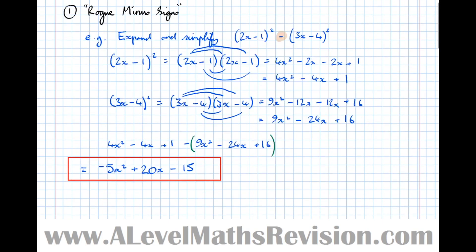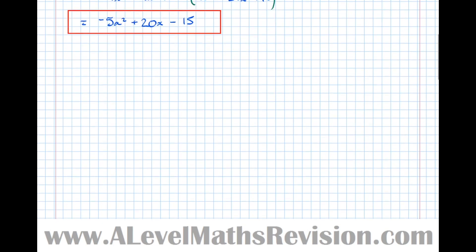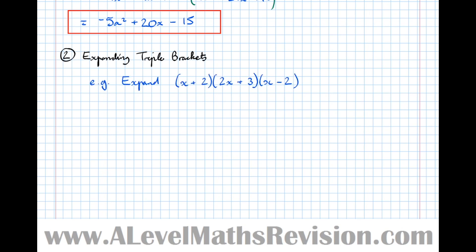Let's move on to another concept that was introduced at GCSE but is imperative for A Level: expanding triple brackets. Take the example x plus 2 times 2x plus 3 times x minus 2. The first thing you should do is take a pair of brackets and expand those. Expanding x plus 2 and 2x plus 3 gives 2x squared plus 3x plus 4x plus 6.